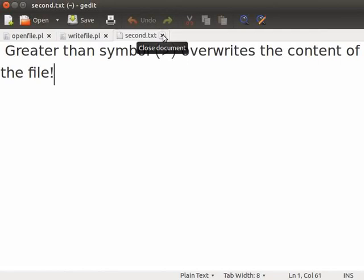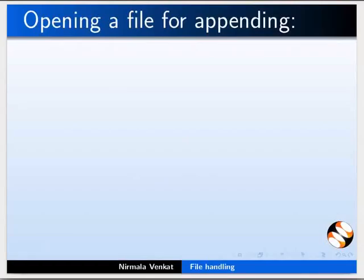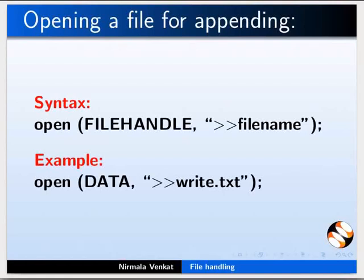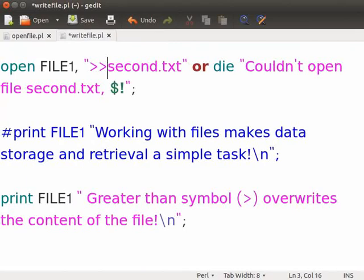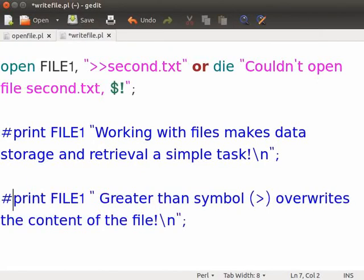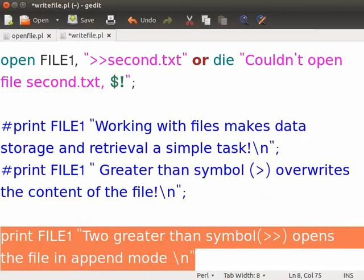Let us close the second.txt file. Next we will see how to append data to an existing file. The open statement with two greater than symbols denotes the append mode. Now I will open the write_file.pl again in gedit. In the open statement, type two greater than symbols to denote that the file is in append mode. Comment the previous print statement as it is already executed. Add the line: print file1 "two greater than symbol opens the file in append mode" to append to the existing data.